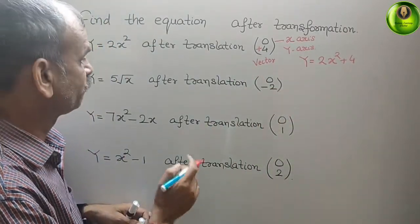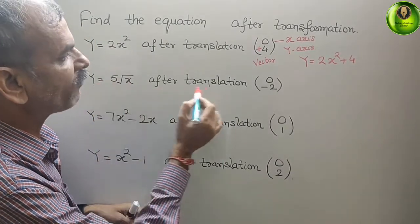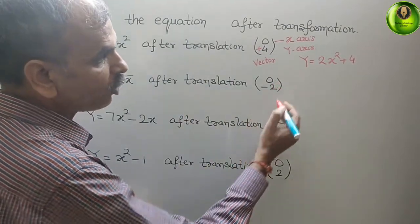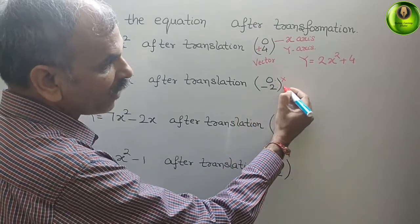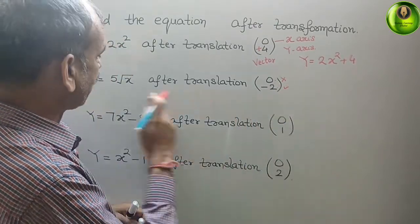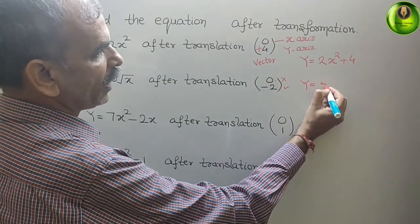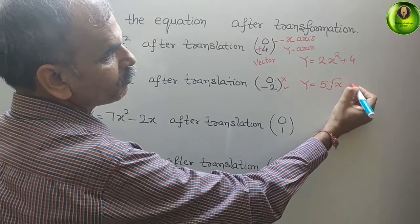Next. Here they have given y = 5√x after translation (0, -2). Here also, x-axis, there is no shifting. And y is minus 2. Therefore, here you will get y = 5√x - 2.